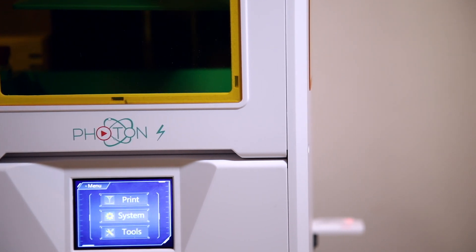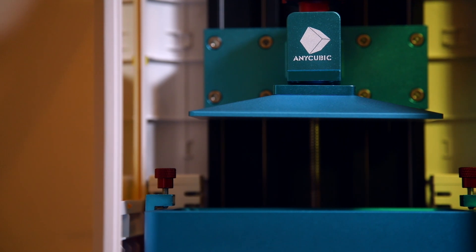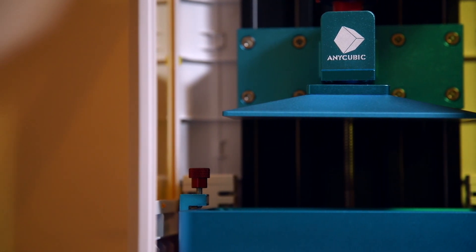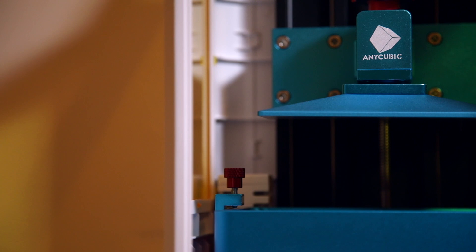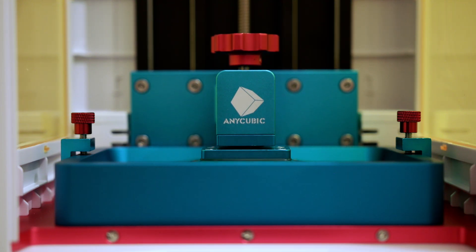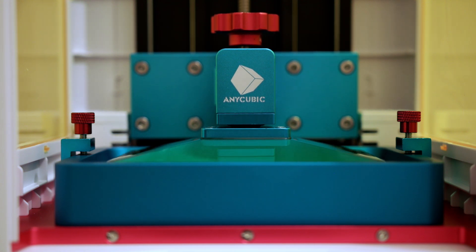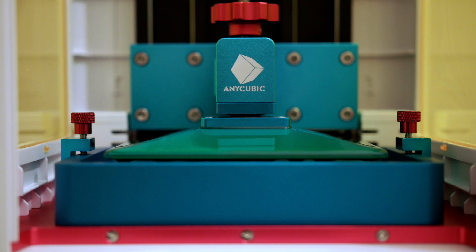The Photon S features a 0.78 inch per hour printing speed. It weighs 13 pounds and it uses a 2560 by 1440 pixel LCD display. It can print layers as fine as 25 microns or as coarse as 100 microns and has a total build volume of 4.5 by 2.6 by 6 inches.